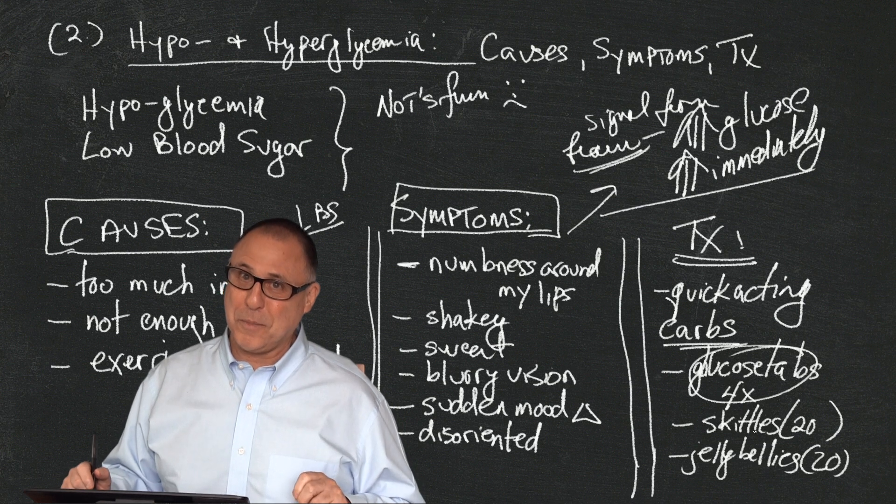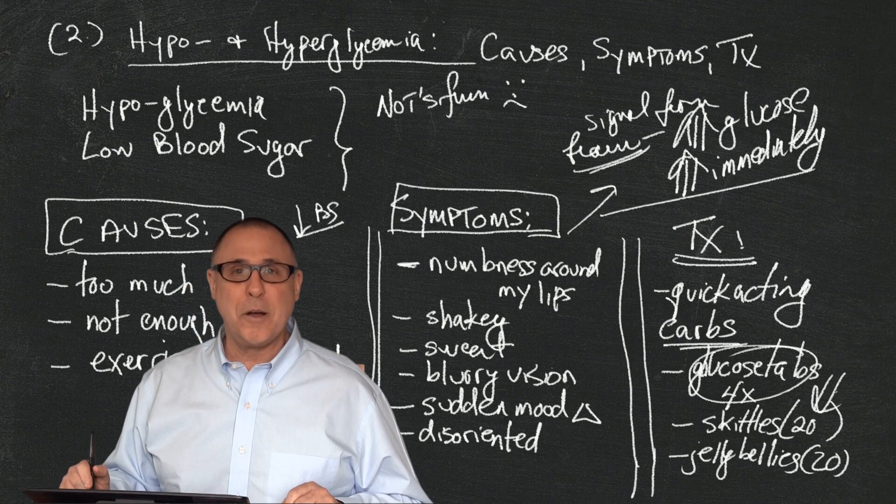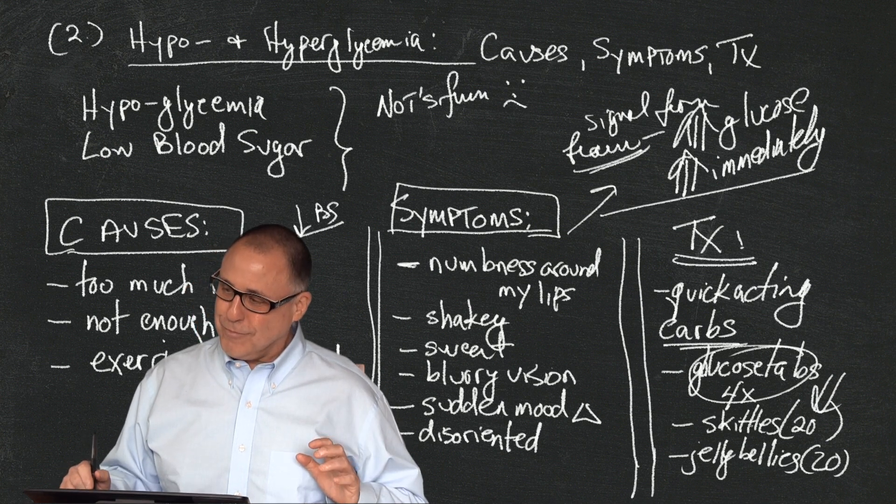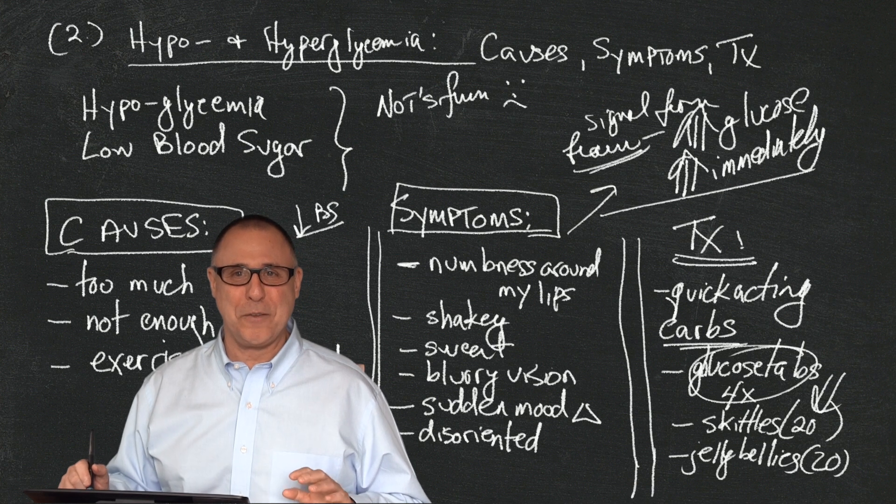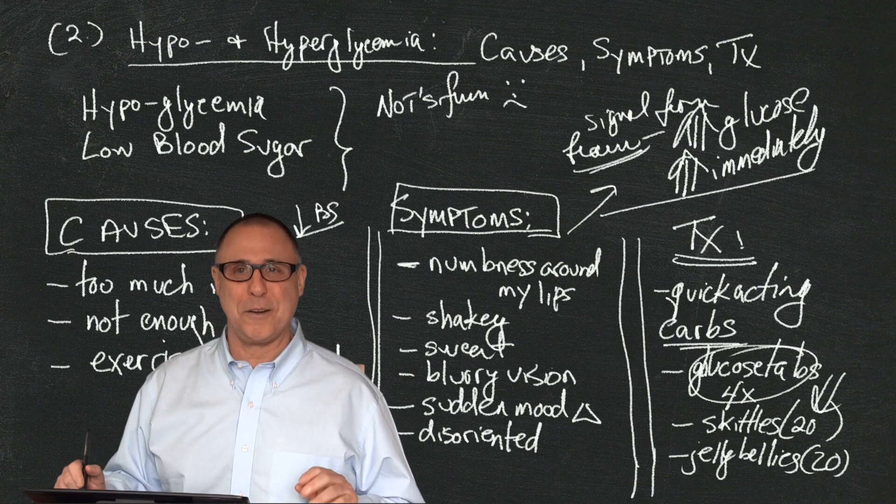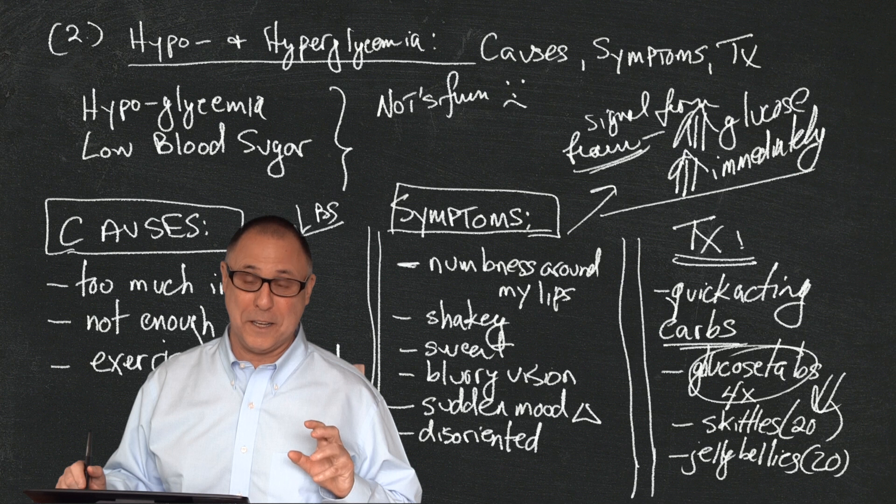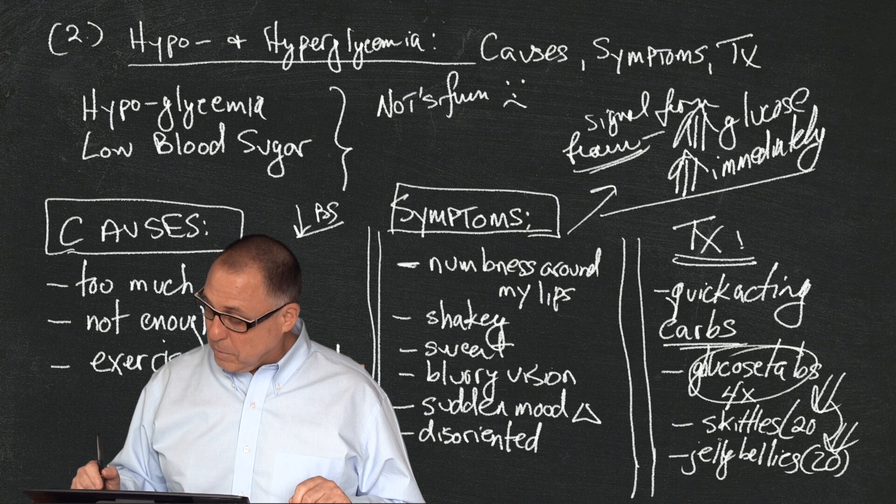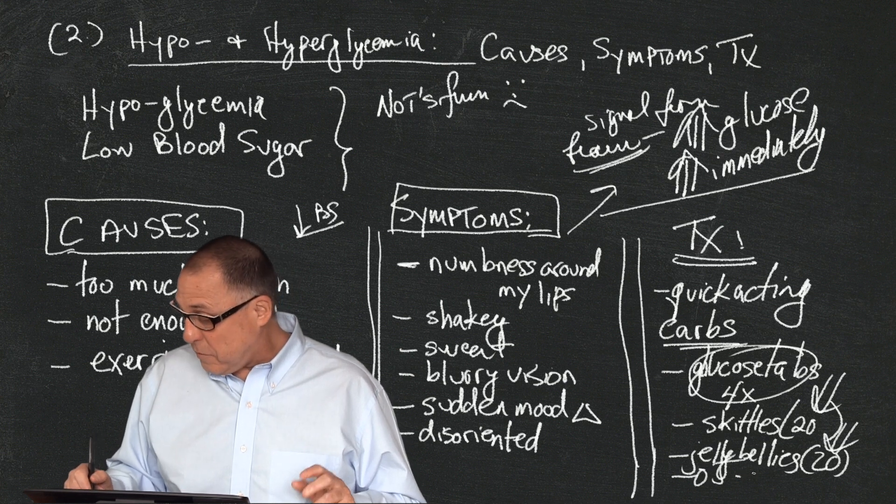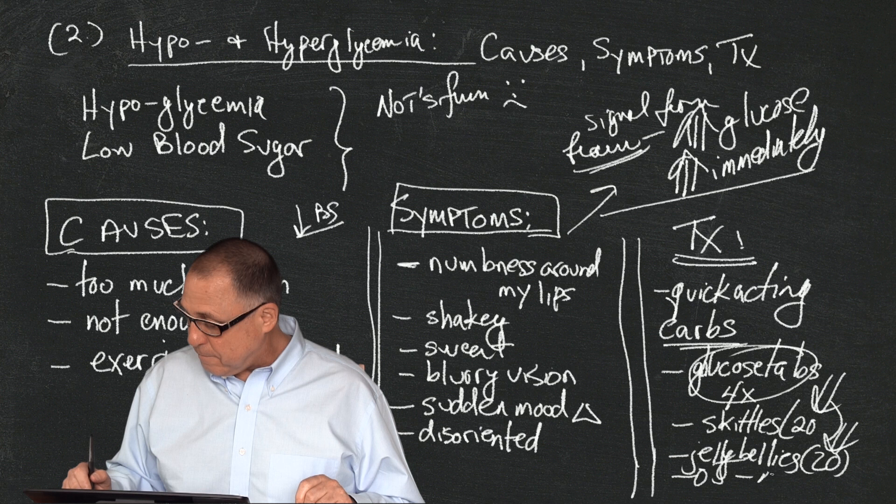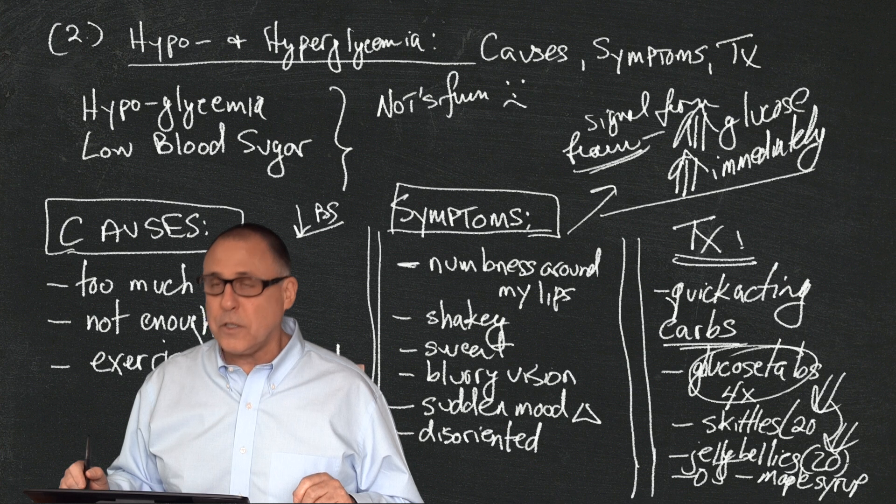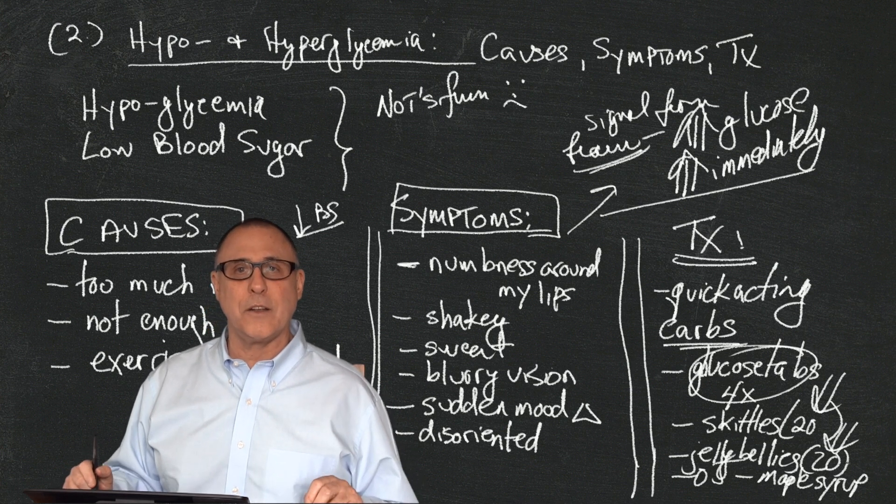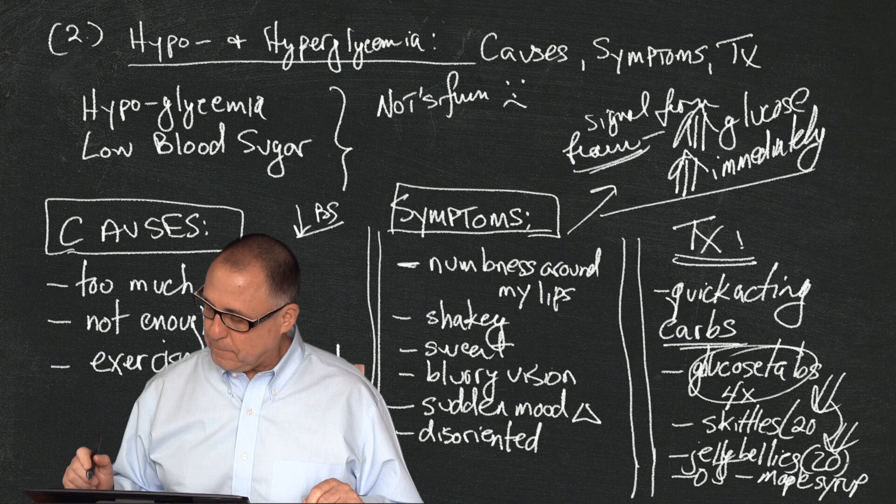I find it very hard to restrain myself to 20 jelly bellies or 20 Skittles. But if you have the emotional wherewithal to restrain yourself, or you have a partner or parent around just doling out exactly how many you need, you could use those things. You can also use orange juice. You can also, if you're Canadian, use maple syrup. Anything that is available to you to jack your blood sugar up quickly is what we're talking about.